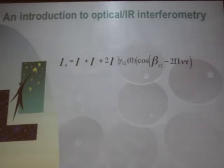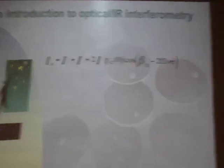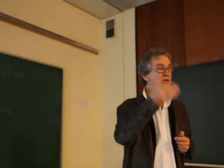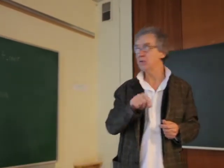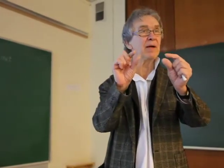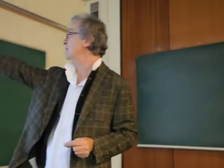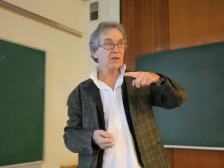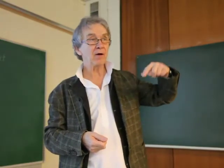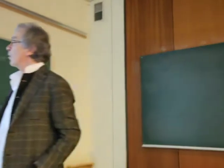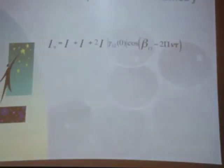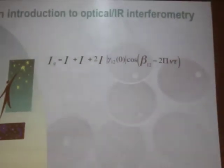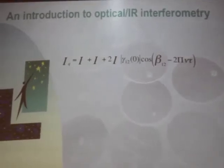We are beginning with Young's experiment — two holes — and we are looking at a source of quasi-monochromatic light. We saw that in the observer plane, the intensity distribution, as long as the two holes have the same dimensions, was given by that expression. What we see is the alternance of bright and dark fringes, with a contrast defined by the complex degree of mutual coherence, which is the visibility of the fringes: V = (I_max − I_min) / (I_max + I_min).